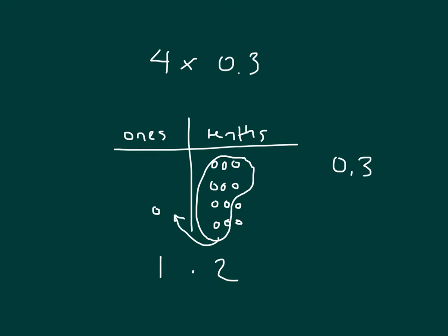Again, we're taking 3 tenths, multiplying it by 4. 4 times 3 is 12, and it's 12 tenths. 12 tenths does equal 1.2, or 1 and 2 tenths.